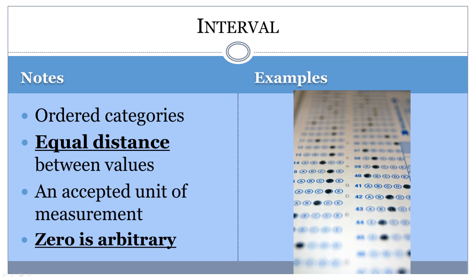For example, tests in school are interval-level measurements of student knowledge. If you scored a zero on a math test, it does not mean you have no knowledge. Yet the difference between a 79 and 80 on the test is measurable and equal to the difference between an 80 and an 81.